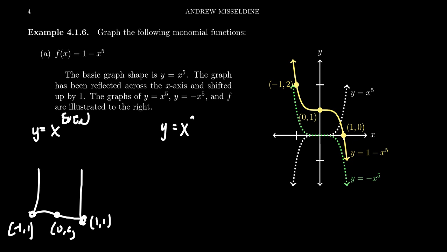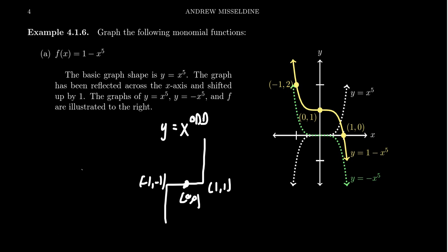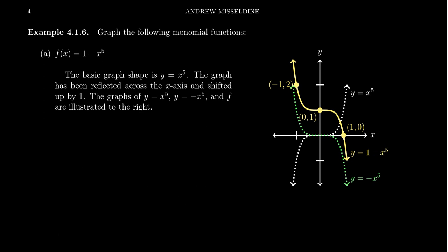And if you take y equals x to some odd power, you see something like the following, where here is your point 1,1, here is your point negative 1, negative 1, and then the origin is between it. So again, as the power gets bigger and bigger, it gets shallow by the origin and steeper everywhere else. You have this basic shape when it comes to graphing these monomial functions.